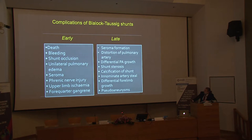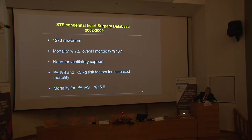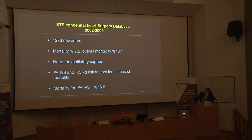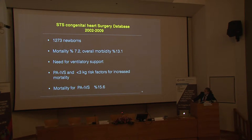What about BT shunt complications? The STS congenital heart surgery database shows mortality for BT shunts at almost 7–8%, which is higher than total repair of TGA. These patients often need prolonged ventilatory support, especially if under 3 kg or if they have pulmonary atresia with intact ventricular septum, which carries nearly 16% mortality — making these patients the best candidates for PDA stenting, as that's where it all began.